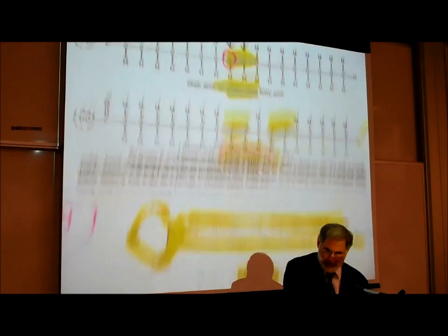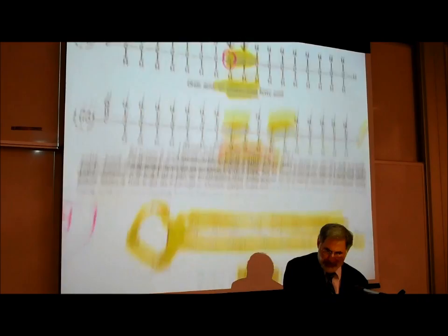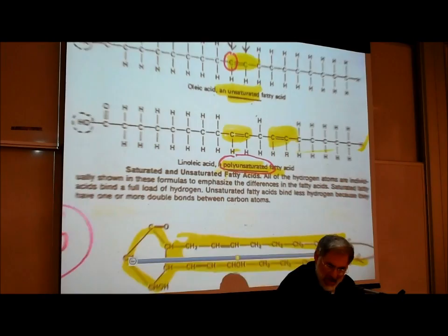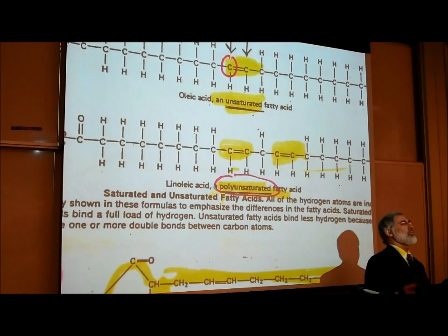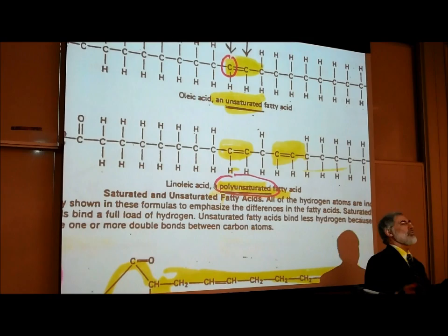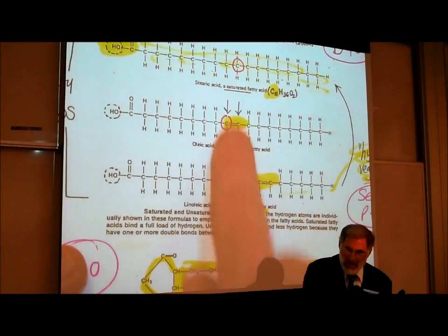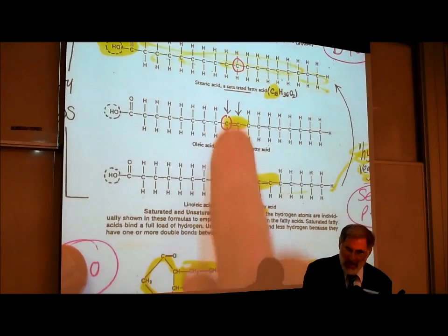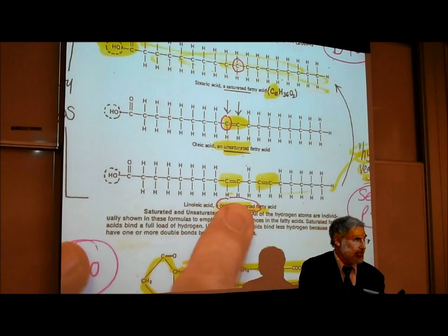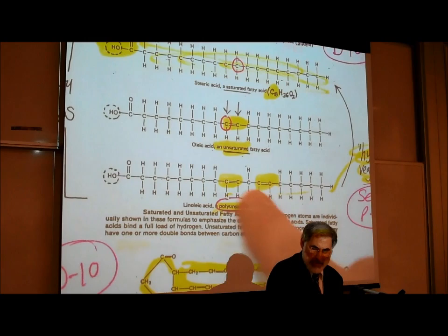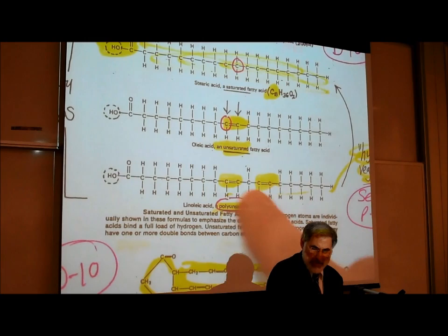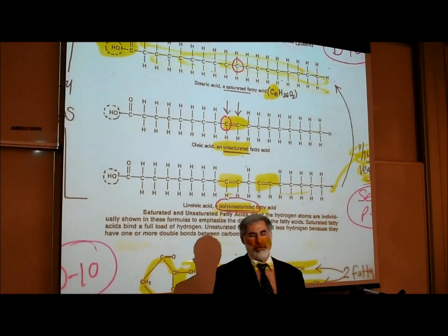In the third fatty acid, in more than one place it's got double covalent bonds, and therefore in more than one place it's missing hydrogens. This is called a polyunsaturated fatty acid, because in more than one place it's missing hydrogens. The less saturated a fat is, the less calories of energy it contains — because the carbon-hydrogen bonds, when broken, release a lot of energy. So fewer carbon-hydrogen bonds means less energy released.